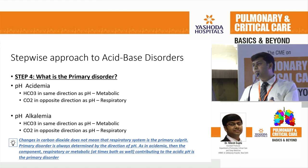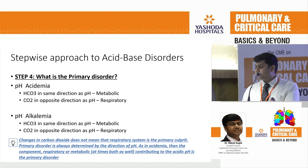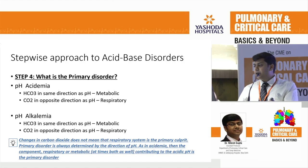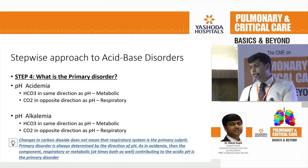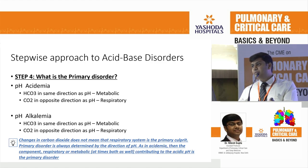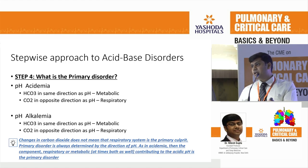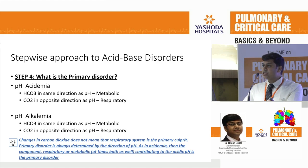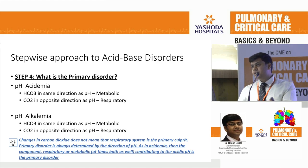Disorders are of two types: respiratory and metabolic. Respiratory disorders can be acute or chronic; metabolic disorders are acute. If there is acidemia — pH less than 7.36 — and bicarbonate has also fallen (same direction as pH), it is a metabolic disorder. If CO2 is rising while pH is falling (opposite directions), it is a respiratory disorder. In the alkalemic range, if bicarbonate has increased in the same direction as pH, it is a primary metabolic disorder; if CO2 has fallen while pH has increased, it is a respiratory disorder.